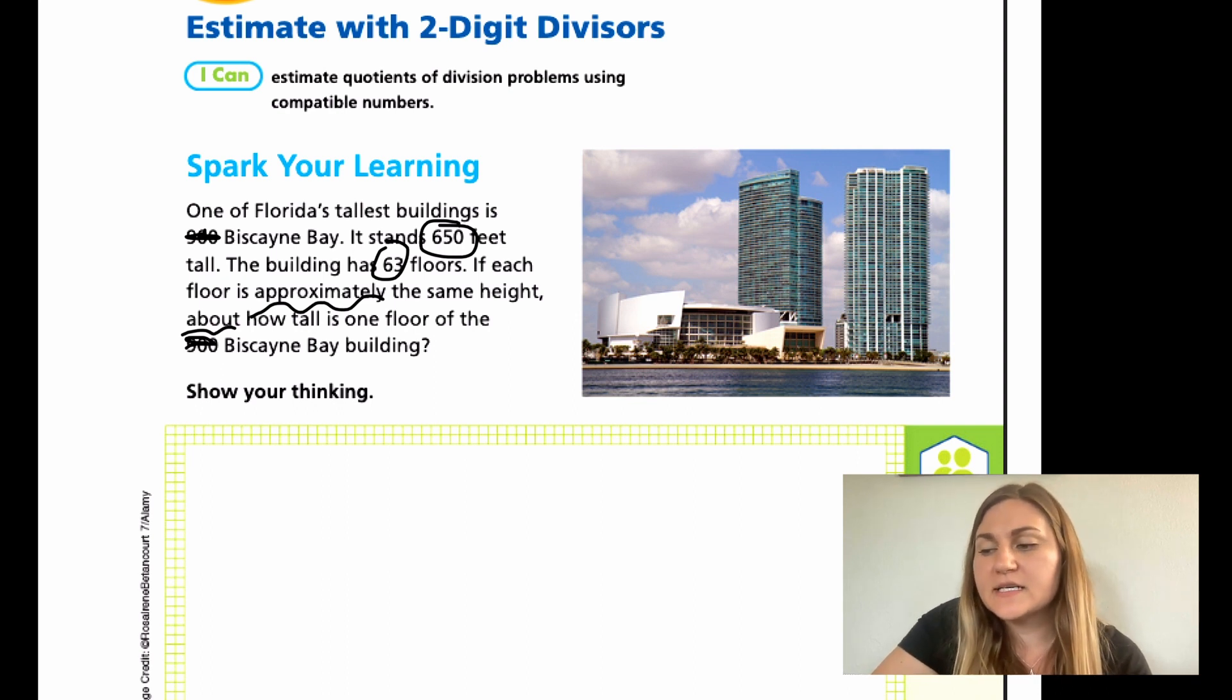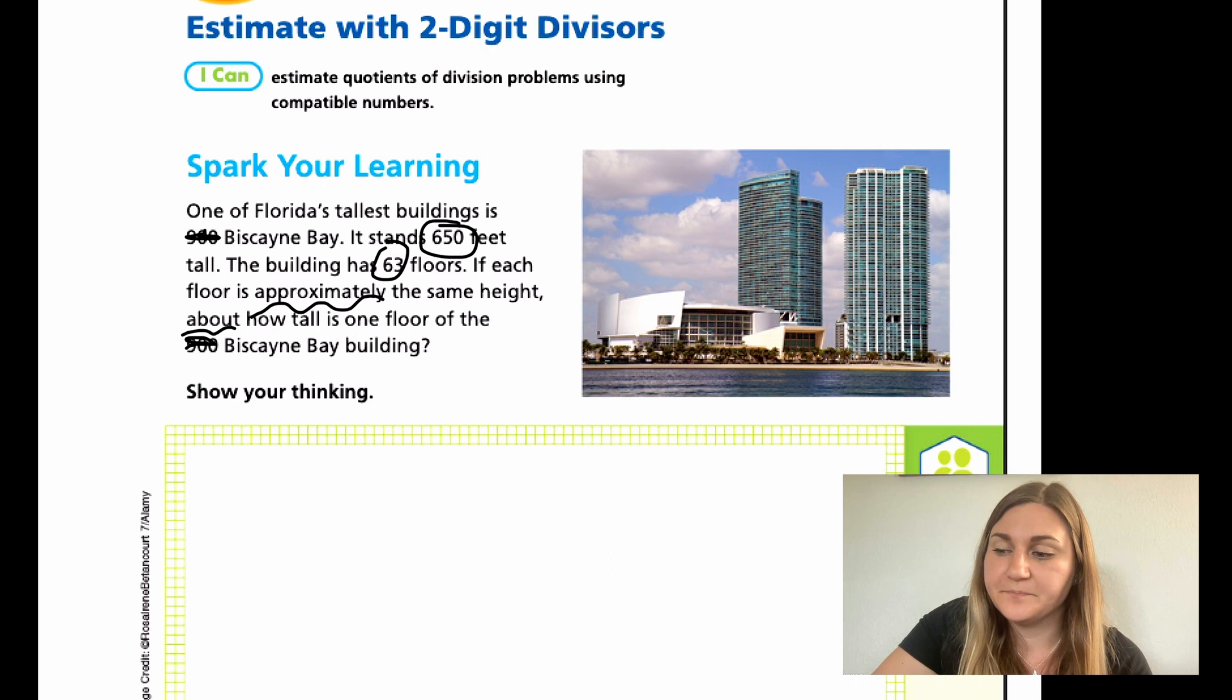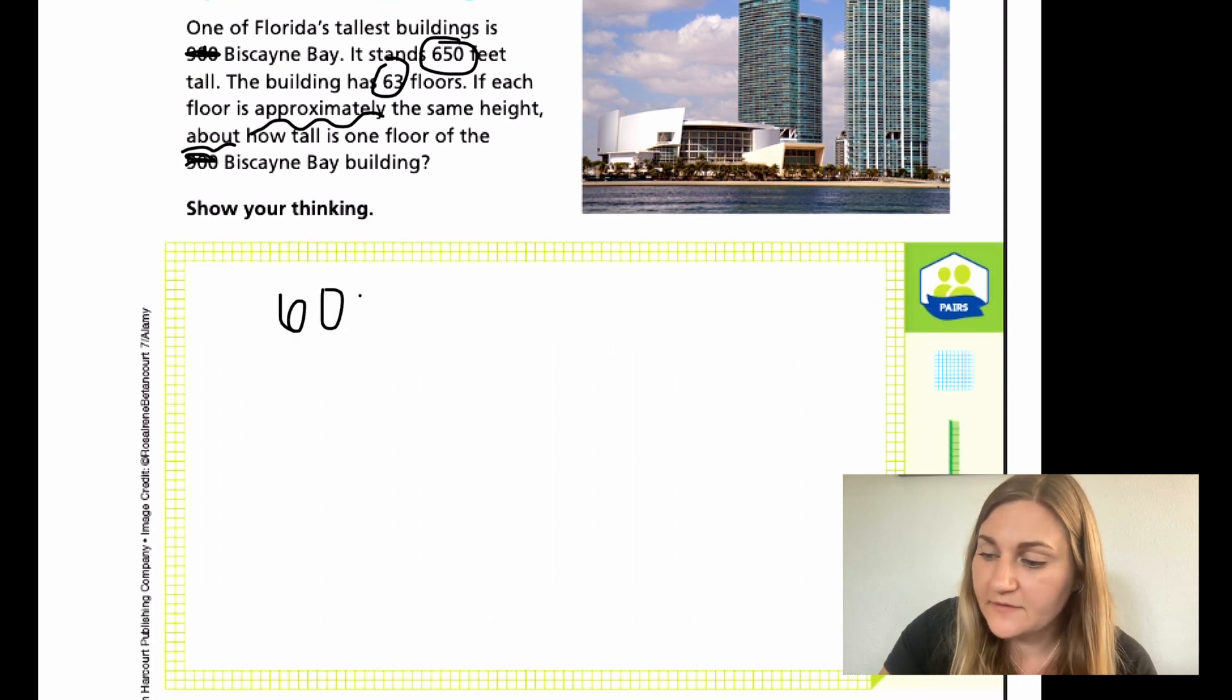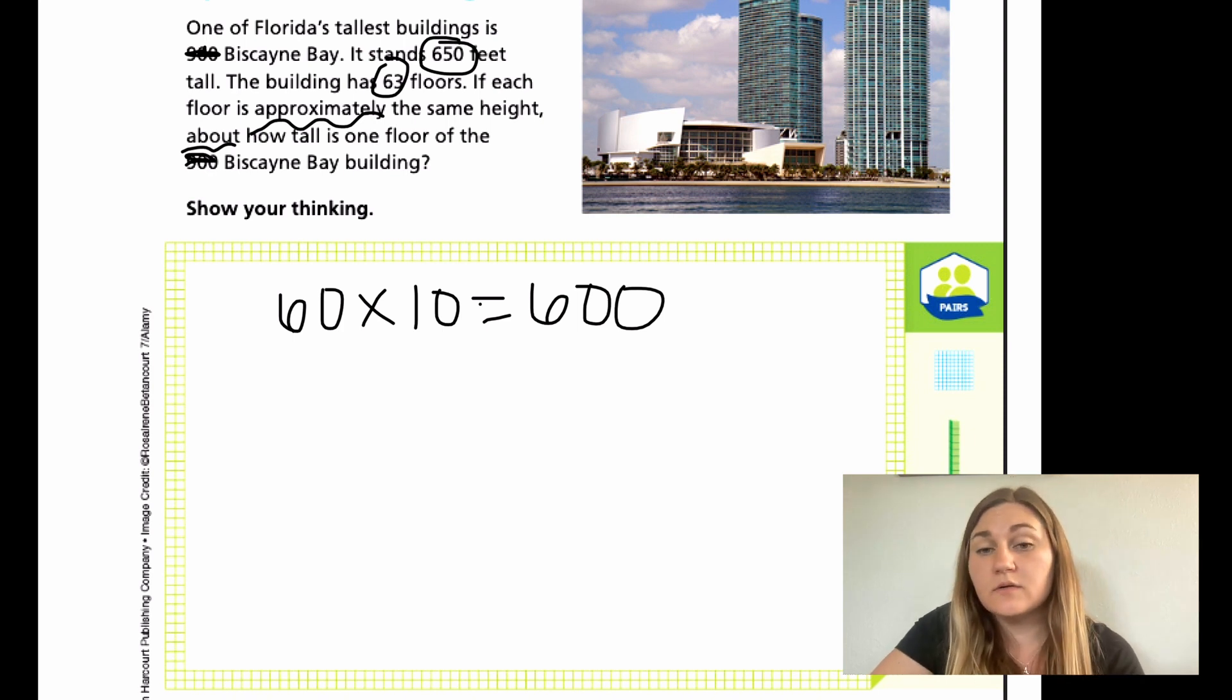Looking at my numbers 650 and 63, they both begin with the same number. So I know that I have some type of power of 10 working here. And this is just rough estimates. So I'm going to take my 63, and I'm going to round it down to 60. If I have 60 times 10, I'm going to get to 600, which is pretty close to my total of 650.